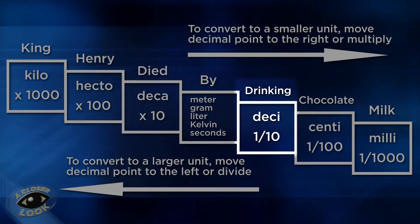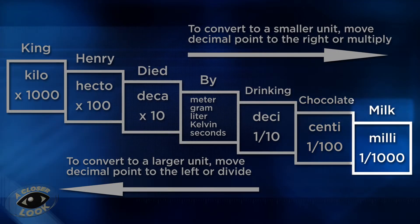By is the base units, drinking is for deci, chocolate is for centi, and milk is for milli. Got it?